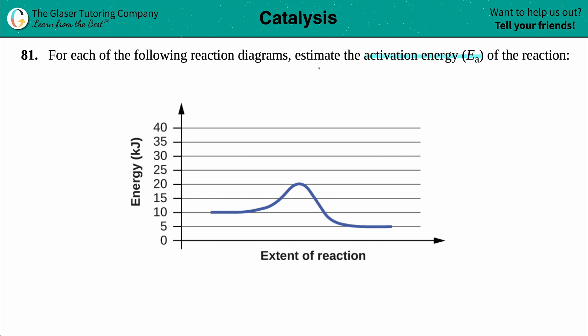Now by definition, an activation energy is the energy, a predetermined amount of energy that the reaction has to reach in order to produce your products. On this reaction diagram you're always going from left to right as how we read, so the left hand side is the reactants where you're starting off.